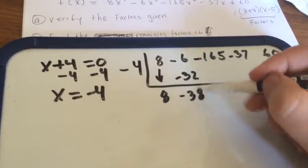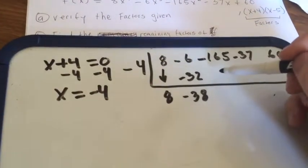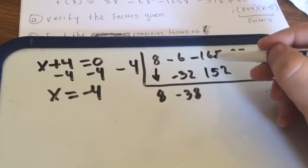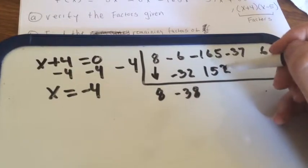Multiply negative 38 times negative 4, you get 152. Subtract those two, and you should get negative 13.